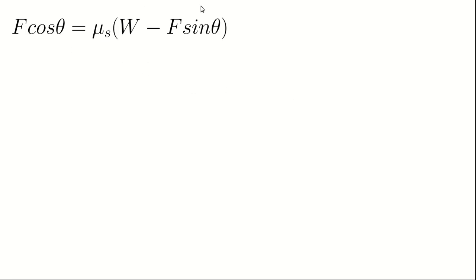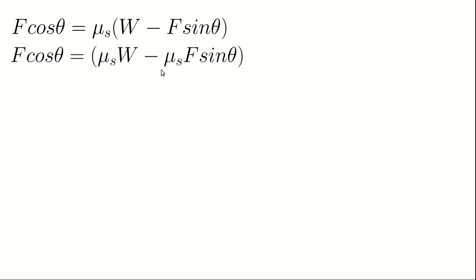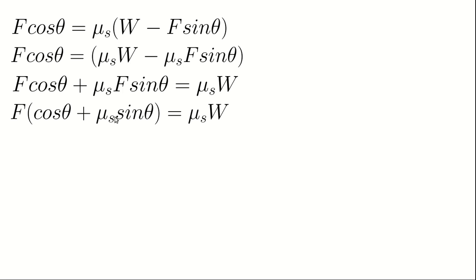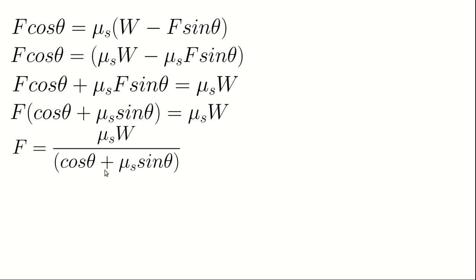Expanding the right side: F cosθ = μsW minus μs·F sinθ. Since F appears on both sides, we collect F terms: F cosθ + μs·F sinθ = μsW. Factorizing F out on the left side: F(cosθ + μs sinθ) = μsW. Making F the subject: F = μsW divided by (cosθ + μs sinθ).